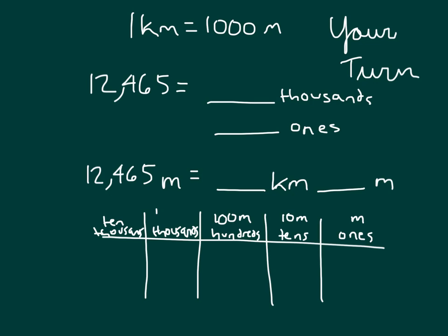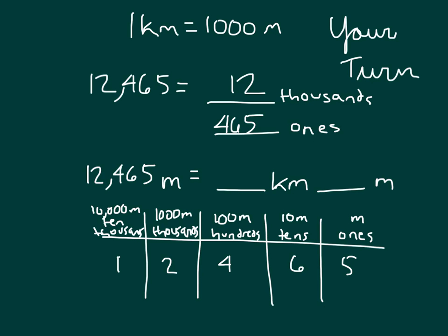Hopefully you did your place value chart correctly: ones, tens, hundreds, thousands, and even ten thousands. Our ones are the smallest unit — one meter. Tens is ten meters, hundreds is 100 meters, thousands is 1,000 meters, and ten thousands is 10,000 meters. Placing the digits 1, 2, 4, 6, 5 into the chart gives us 12,465 meters. Breaking it apart into thousands: twelve thousands with 465 ones, so twelve kilometers and 465 meters.